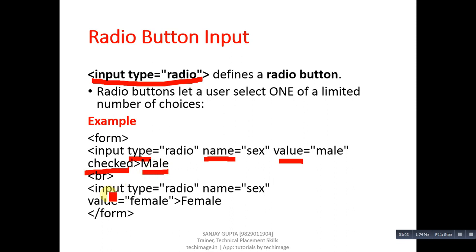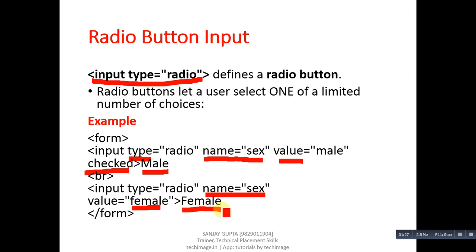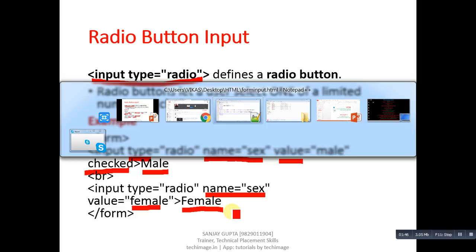To link another radio button, you use input type radio, and its name should be the same as the previous radio button. If you want to group radio buttons together, the name of those radio buttons should be the same. Its value is female, and this text will be displayed on the web browser. The value attribute is required when you connect your HTML code with a server-side scripting language like PHP, ASP, or JSP, as those languages receive values using the value attribute.